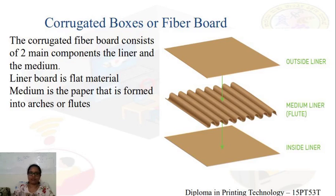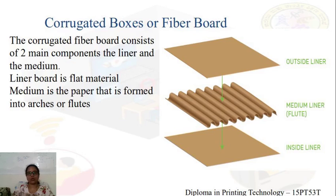The corrugated fiber boards consist basically of two main components: a liner and a medium. As shown in the picture, the liner is a flat material and the medium is a paper formed into arches, also called flutes. The tips of the flutes are glued so that the plain liner is sandwiched in between two liners to form a corrugated fiber board.